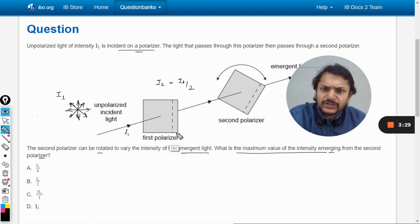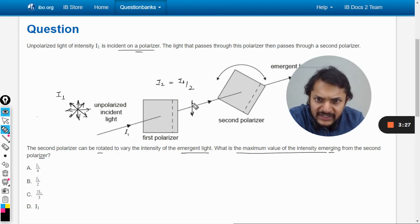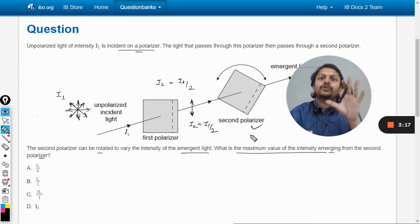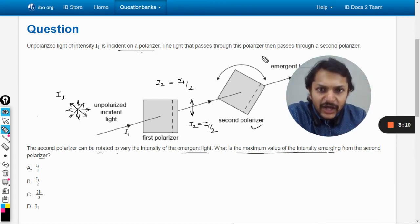In our case, the axis is vertical so the output will be vertical. As far as I₂ is concerned, I₂ will be I₁ divided by 2. Now, when polarized light hits the second polarizer, we apply Malus's law.